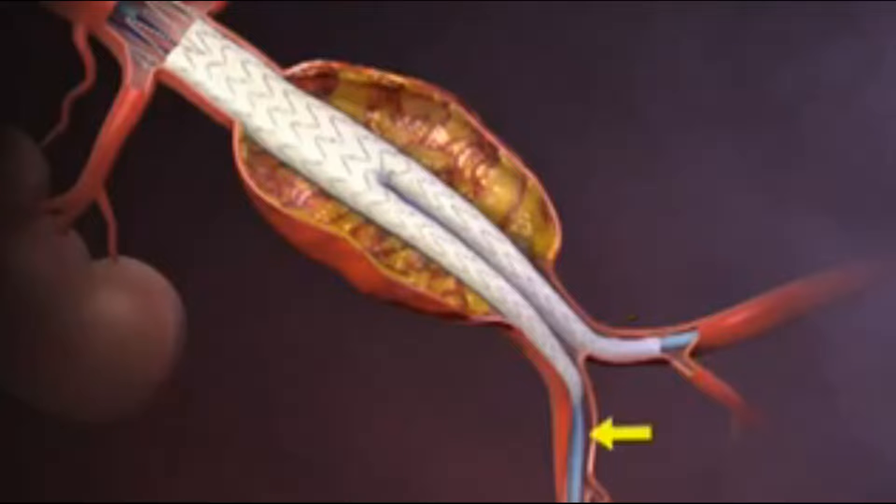The ipsilateral limb of the stent graft is deployed in similar fashion. A balloon is then introduced and used to expand all graft-to-vessel and graft-to-graft junctions in the proximal to distal direction to ensure a tight seal.